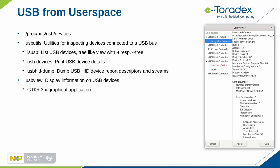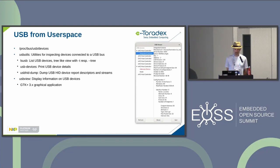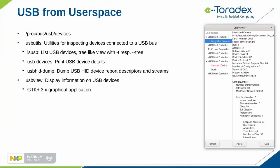In user space, you have /proc/bus/usb/devices to see what the bus is doing. The usbutils package includes lsusb to list all device details, with a tree-like view via -T or --tree. There is also usb-devices which prints all USB device details, and usbhid-dump which dumps report descriptors and streams for human interface devices. The graphical USBView application is a GTK+ 3 app showing all this information nicely.